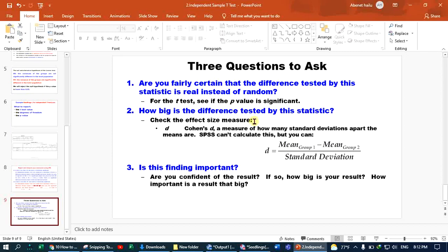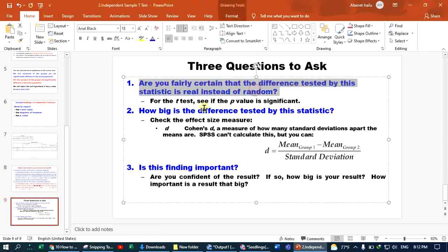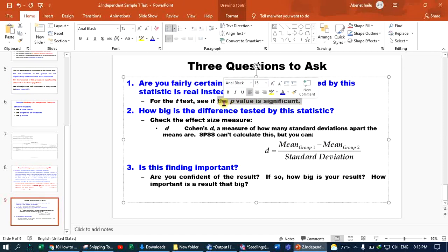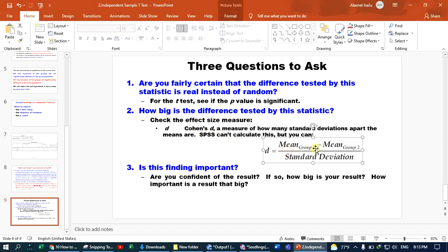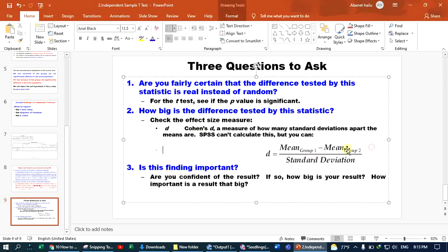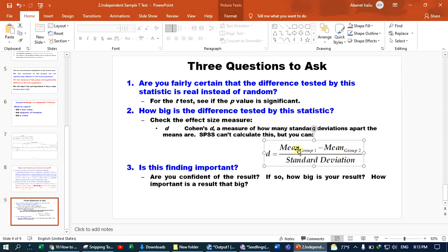Three questions about t-test: Are you fairly certain that the difference tested by these statistics is real instead of random? For the t-test, see the p-value, which determines it. How big is the difference tested by these statistics? Look at the mean difference and effect size. Is this finding important?